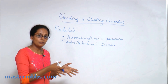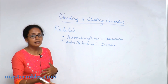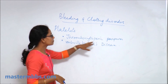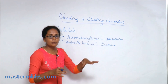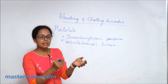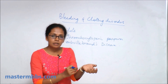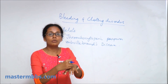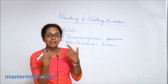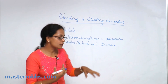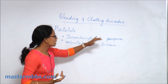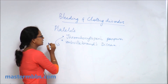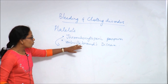Thrombocytopenia means a decrease in platelet count. When there is a decrease in platelet count, there is purpura. Purpura is the blood that is seen on the skin — you see reddish-blue dots on the skin and the mucous membrane. So they are called thrombocytopenic purpura.